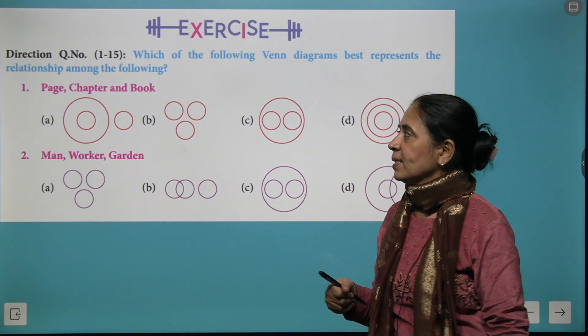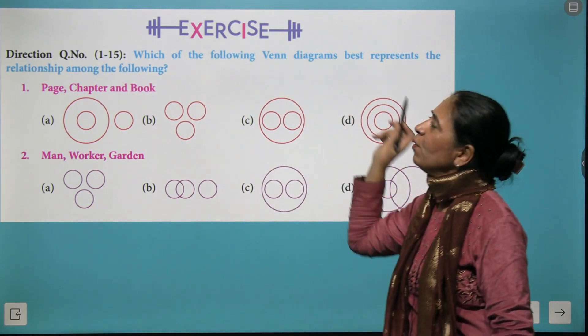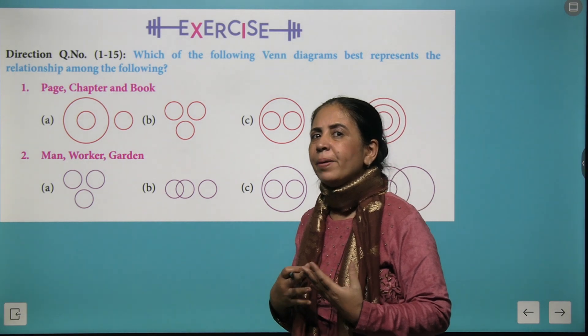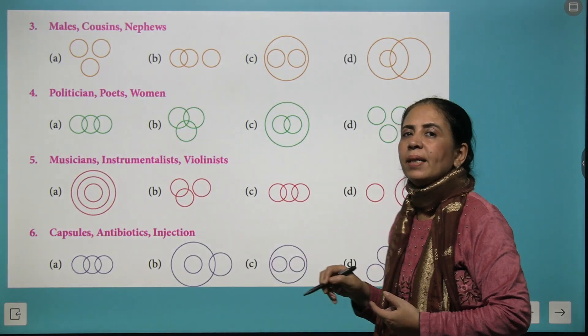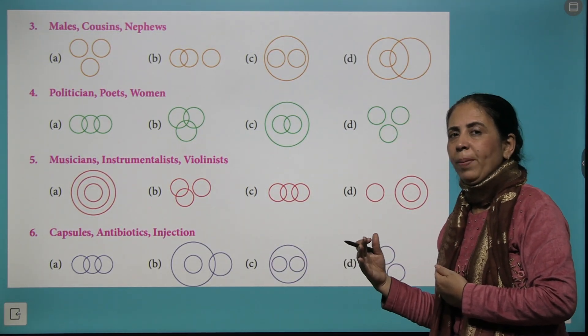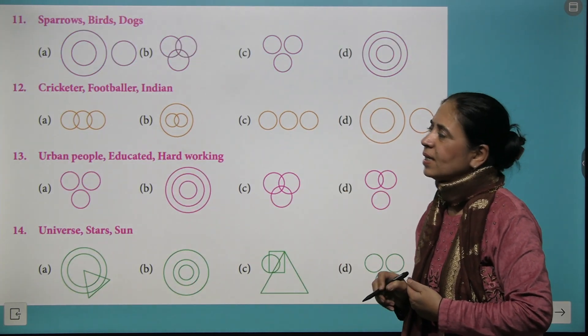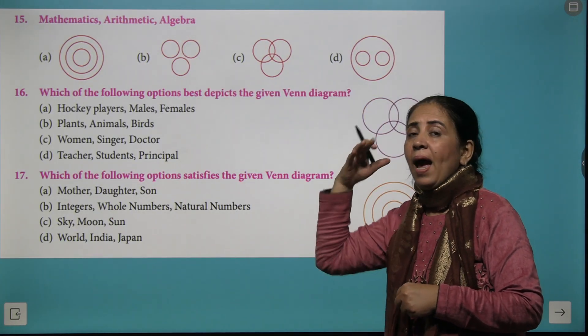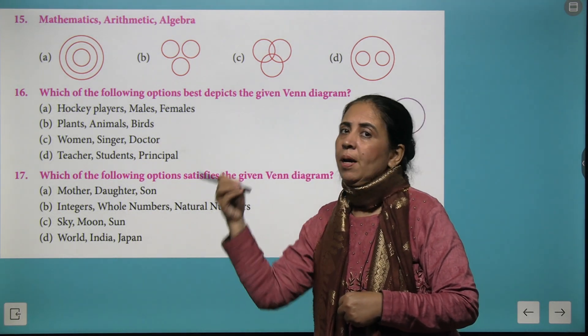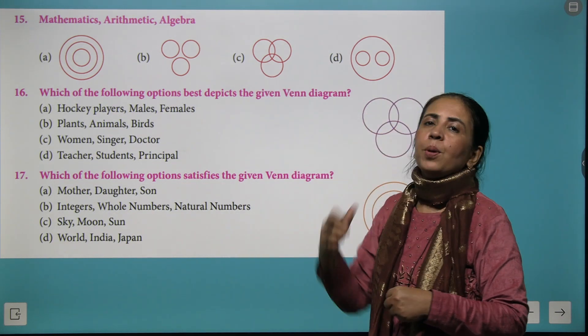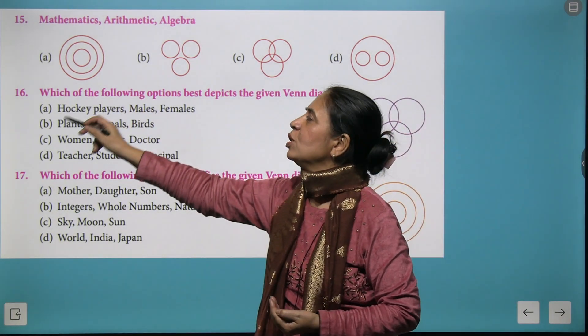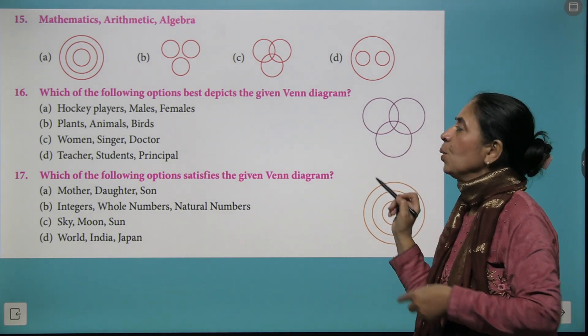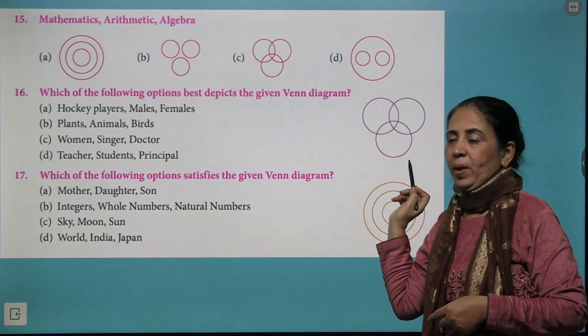Now we have an exercise. Look at this first question: you have to find which of the following Venn diagrams best represents the relationship among the following. After doing so many examples, your turn to just read the questions properly and then explore which relation is the right combination and find the appropriate answers for these given questions. So what you need to do is read each question properly and then create a relation between their properties, between their qualities, between their features, and you'll get the right answer. One more different category of question we have in which: which of the following options best depicts the given Venn diagram? Here the Venn diagram is given and you have to find which of these represents this Venn diagram.